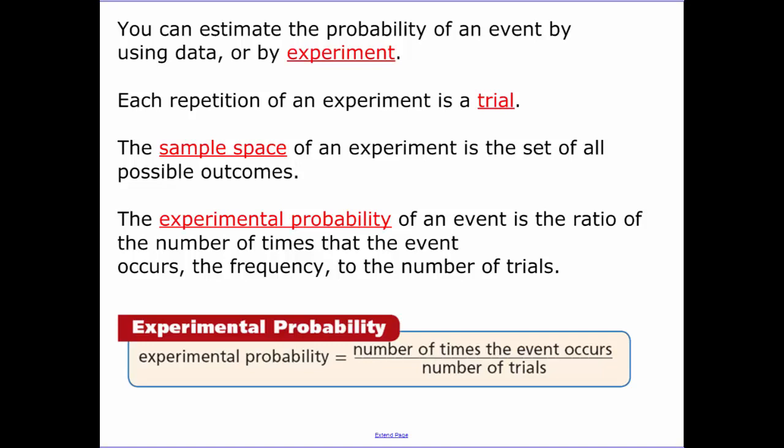Now experimental probability. You can estimate the probability of an event by using an experiment. Each repetition of the experiment is called a trial. The sample space of the experiment is the set of all possible outcomes. The experimental probability of an event is the ratio of the number of times the event occurs, the frequency, to the number of trials. With experimental probability, the number of trials is the total amount in your sample space, and the top is the number of times you got what you wanted to happen.